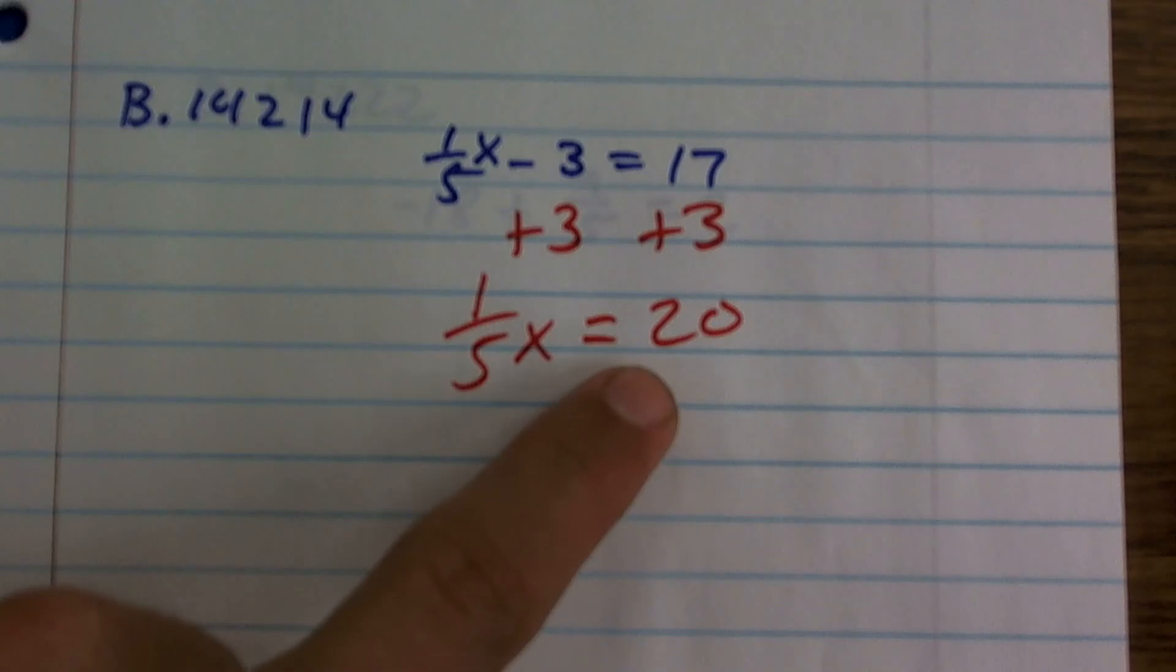Then you can remember, well, instead of dividing by one-fifth, you can multiply by the reciprocal, which would be 5.